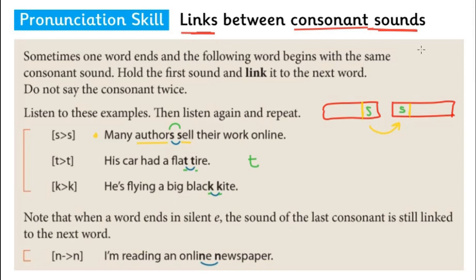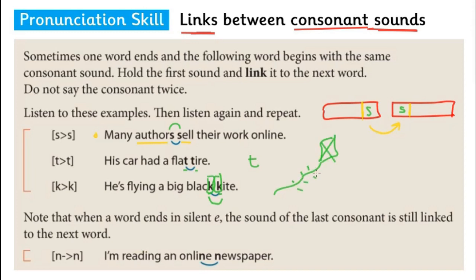And the third example: 'He's flying a big black kite.' The consonant sound K at the end of 'black' and the consonant sound K at the start of 'kite' — so we connect them. A kite is something children sometimes fly when the wind is blowing.